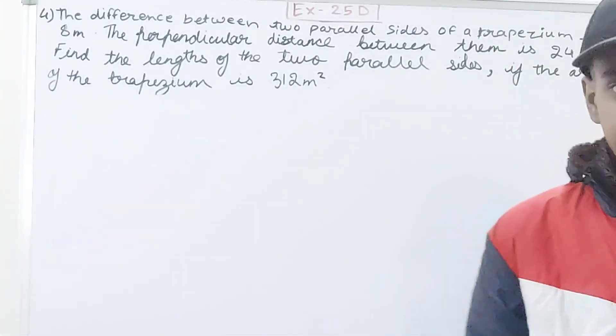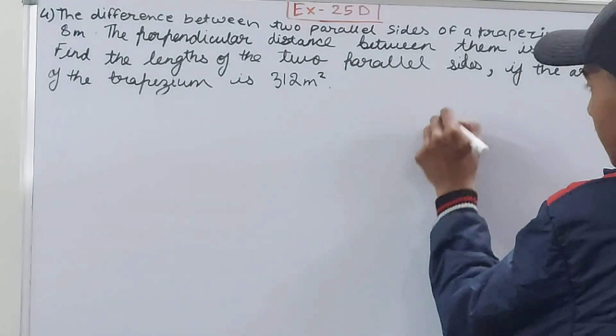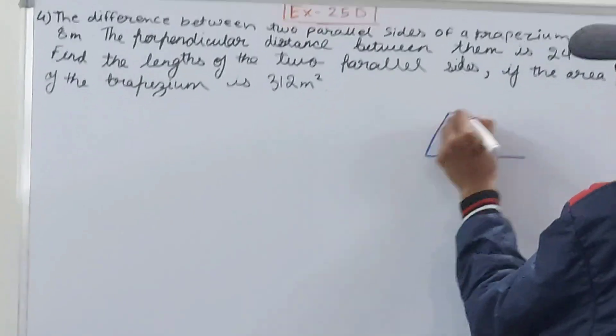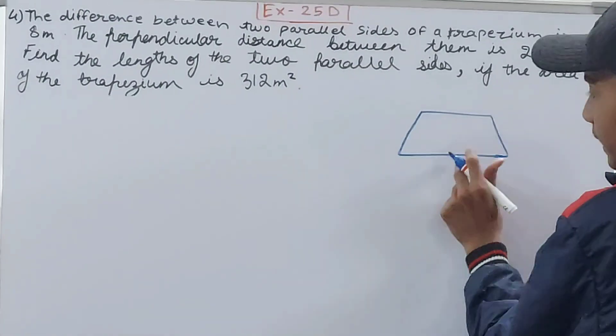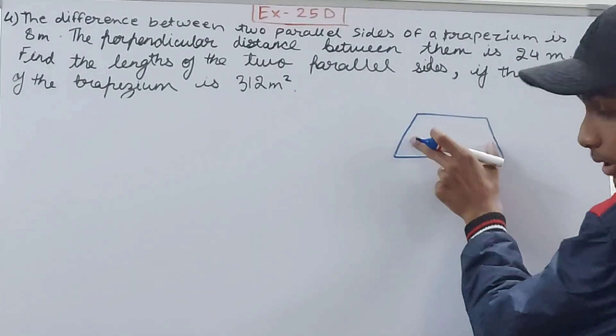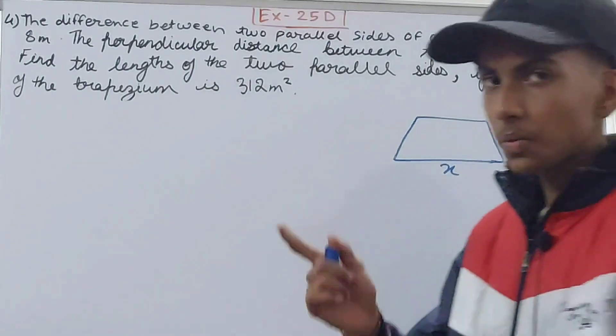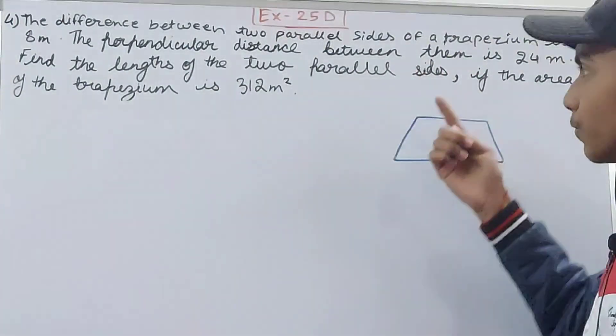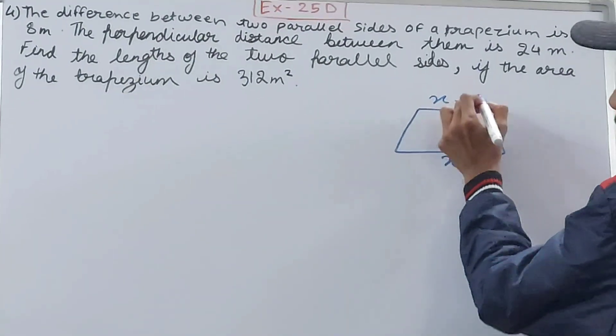So basically we have a trapezium where the difference between the two parallel sides - suppose this is my trapezium, we know that this and this is parallel. This one is not parallel, so let's say this is X. According to the question, there is a difference of 8 meters, so this will be X minus 8.